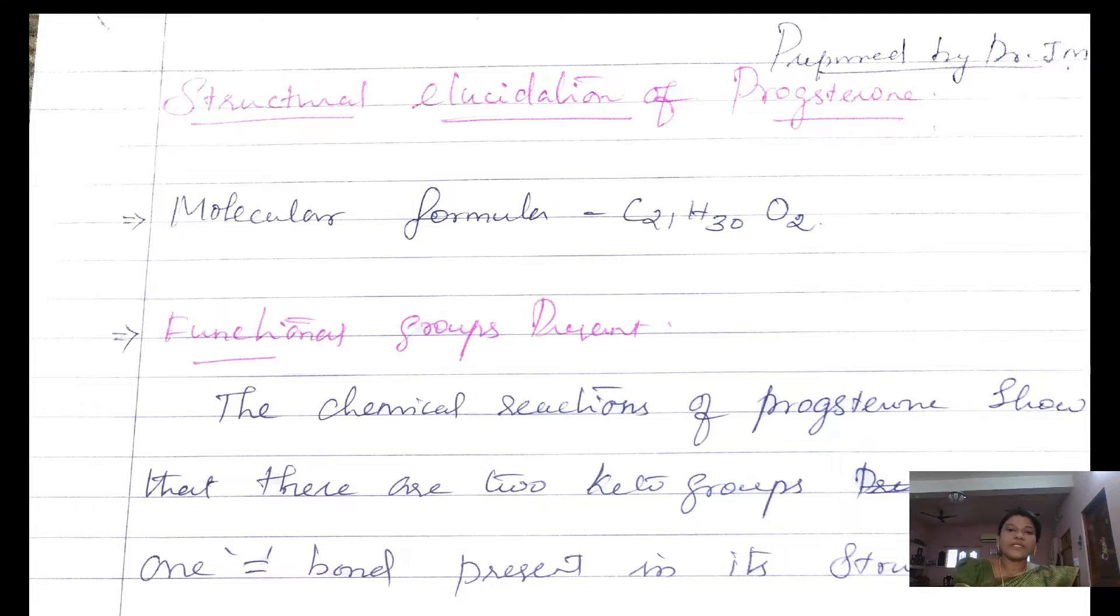Now we no need to bother about the number of carbons or hydrogens, but we have to predict the nature of the oxygen atoms. Through the usual test for functional groups, progesterone is predicted as a diketone because it forms a dioxime with hydroxylamine.